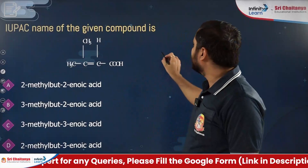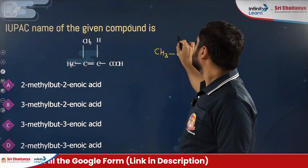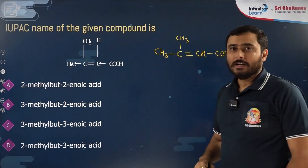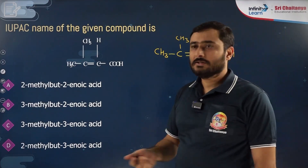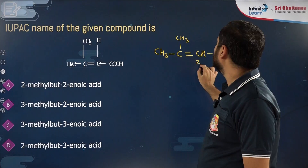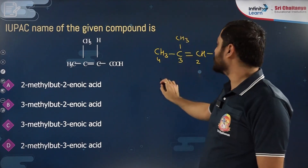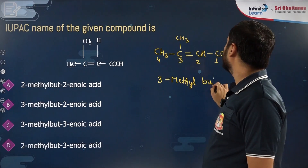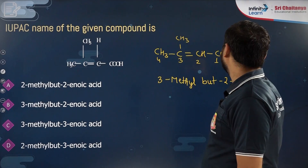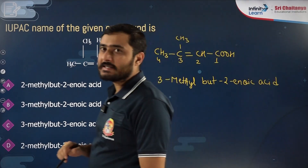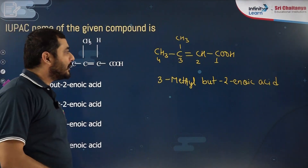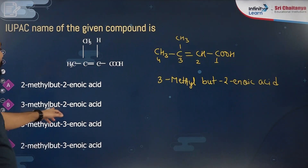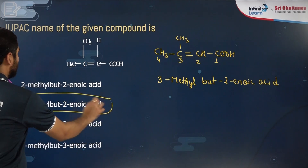Next question is a carboxylic acid. The structure is CH3-CH=CH-COOH. For carboxylic acid, numbering always starts from COOH. Here: one, two, three, four carbons; methyl at third carbon; double bond at second carbon; suffix is -oic acid. The name is 3-methylbut-2-en-oic acid — option B is the answer.